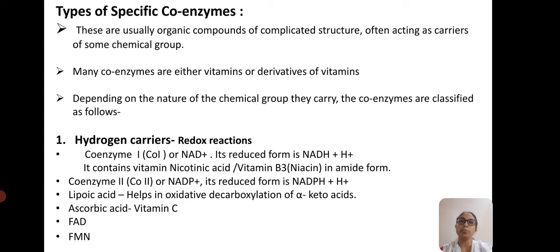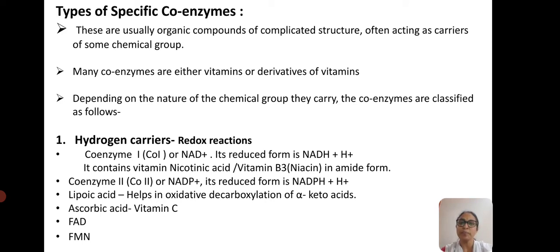Coenzymes are usually organic compounds of complicated structure, often acting as carriers of some chemical group. Many coenzymes are either vitamins or derivatives of vitamins. Depending on the nature of the chemical group they carry, coenzymes can be classified as follows. The first type is hydrogen carriers, which are involved in redox reactions. The EC1 enzyme group — oxidoreductases — gets the assistance of these hydrogen carriers as cofactors.